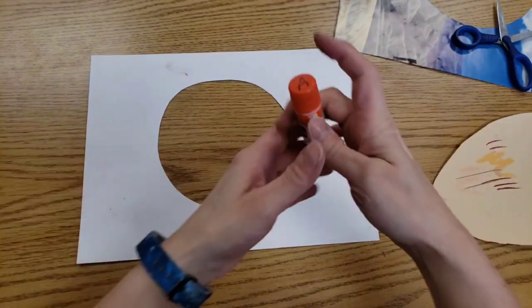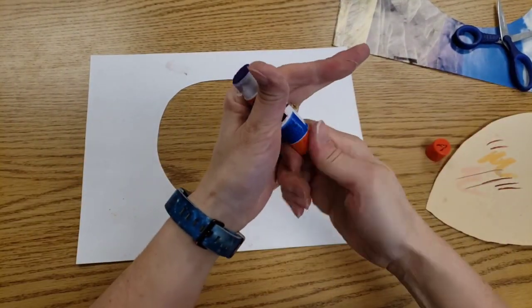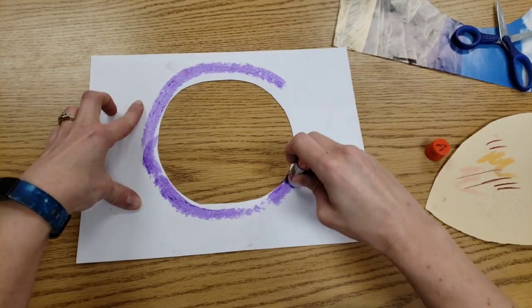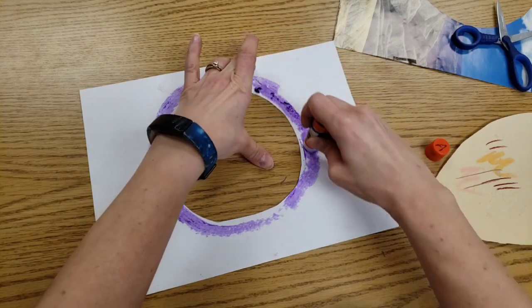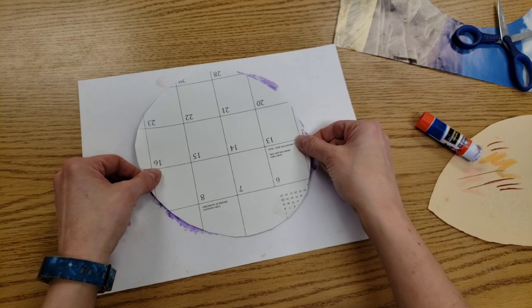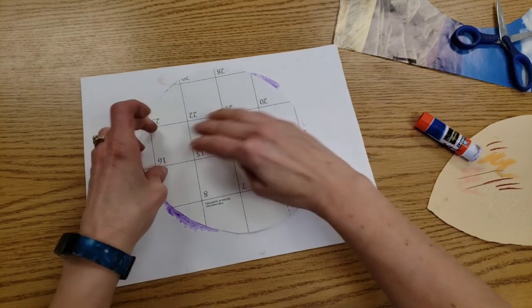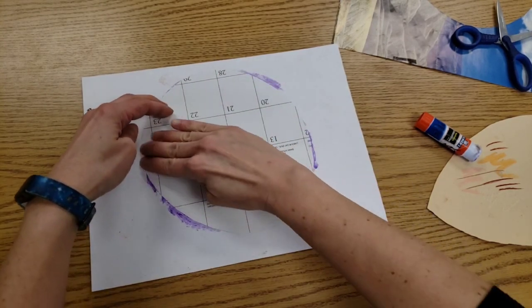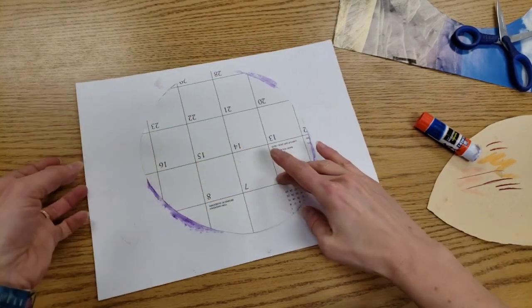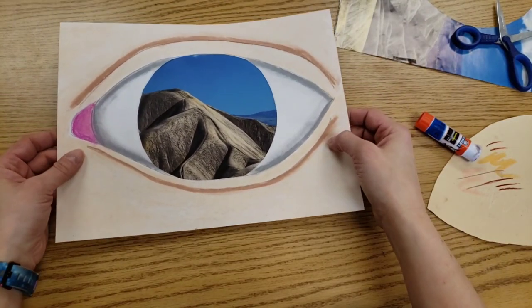Then we flip over your eyeball and take a glue stick and go around the circle. And glue this on. Make sure it covers the hole. Give it a nice massage. So we have this magnificent mountain.